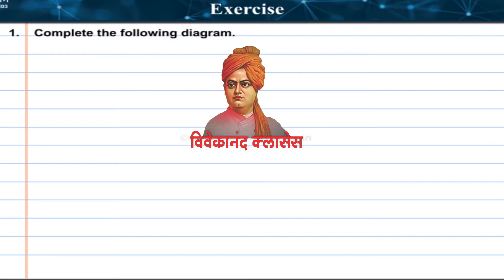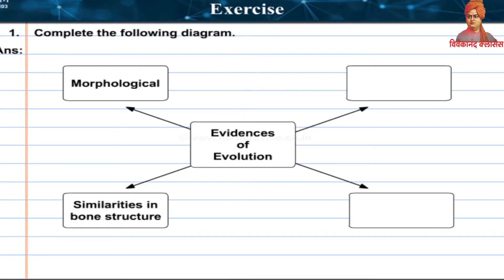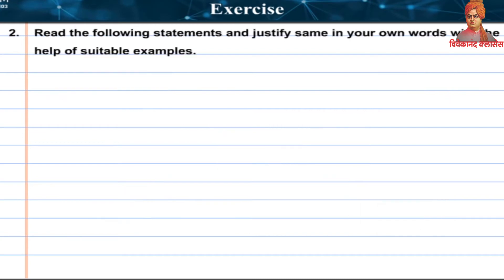Exercise: Complete the following diagram. Evidences of evolution include: Morphological — similarities in bone structure; Paleontological — vestigial organs.